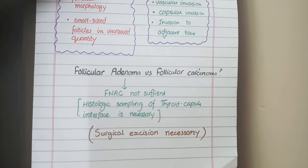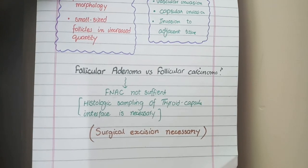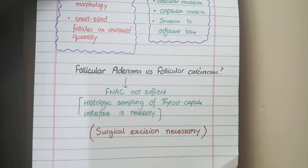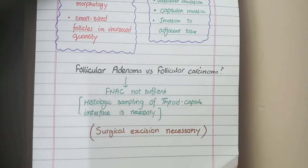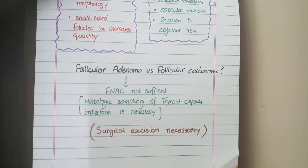Therefore, if a patient presents with a thyroid nodule and follicular adenoma versus carcinoma cannot be determined, the treatment of choice is surgical excision of the nodule, since it could be follicular carcinoma. This concludes our discussion on follicular adenoma and follicular carcinoma.